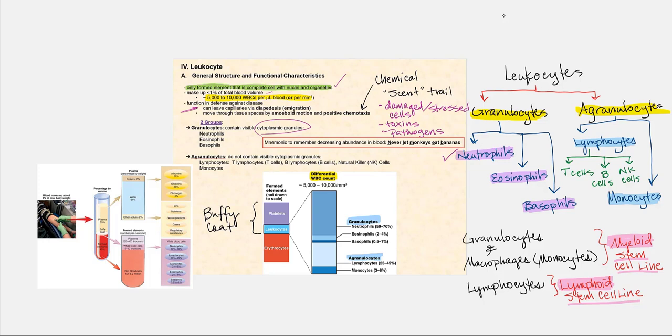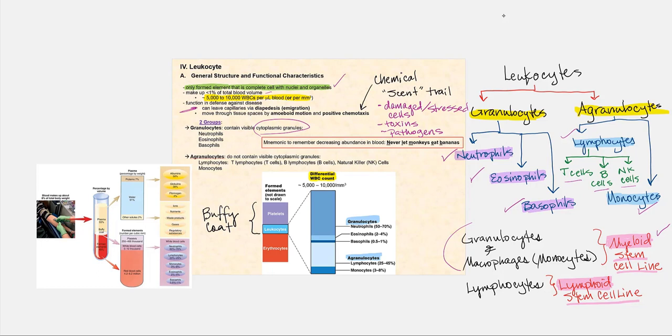The granulocytes include the neutrophils, eosinophils, and basophils. The agranulocytes are the lymphocytes and the monocytes. Within lymphocytes, we can further subdivide them into T cells, B cells, and NK cells — natural killer cells. The granulocytes and monocytes differentiate from the myeloid stem cell line, while lymphocytes differentiate from the lymphoid stem cell line. Regardless, it all begins as a hemocytoblast or hematopoietic stem cell found in the red bone marrow.